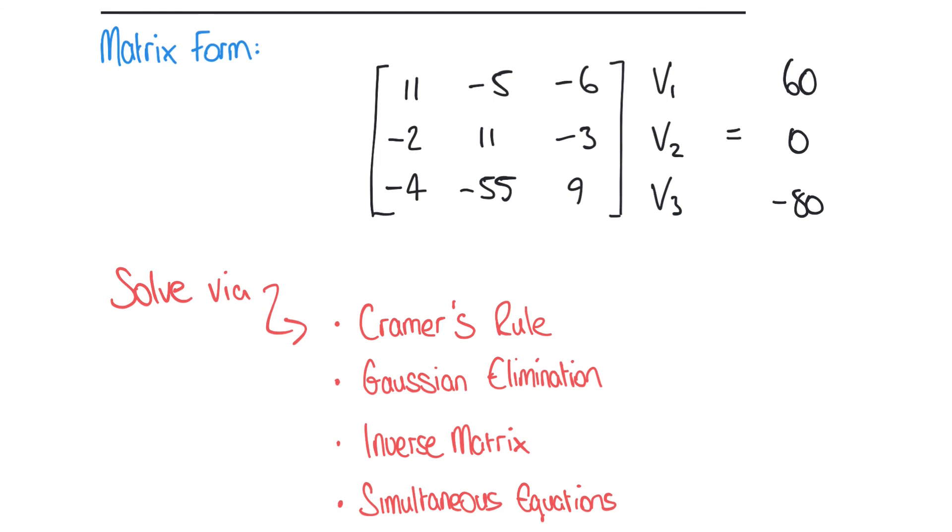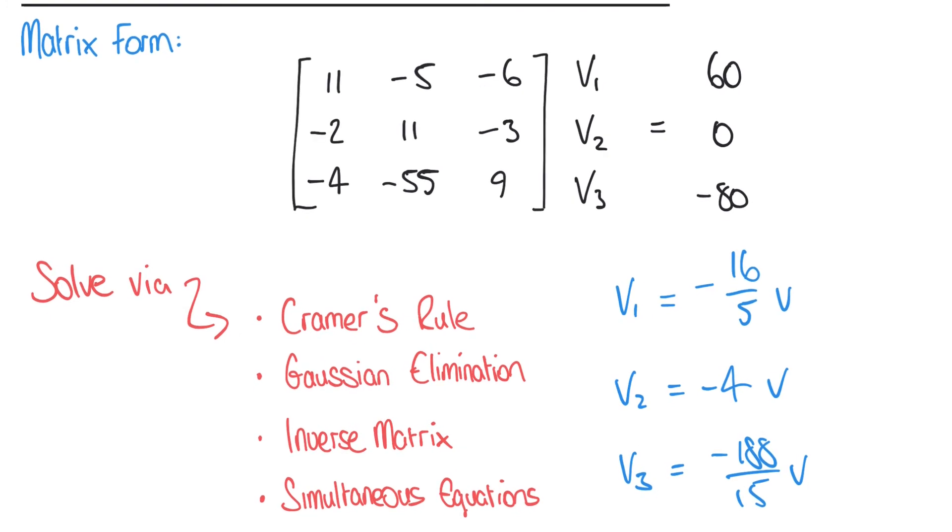For the purposes of this example, we actually find the results as follows: we have v1 is minus 16 over 5, v2 is minus 4, and v3 is minus 188 over 15. They're all in volts. In fractional form as rational numbers, but we could round those to decimals and we get minus 3.2, minus 4, and minus 12.53 volts. If you're not sure where those have come from or you want to see how you would work those values out for yourself, then I would suggest having a look at one of our videos on the inverse matrix approach which would find these results, or the Gaussian elimination method which would also find the same results.